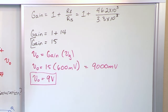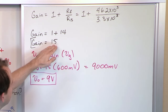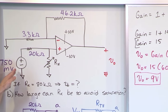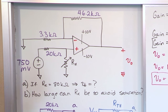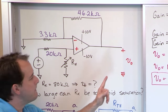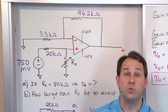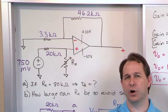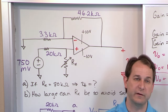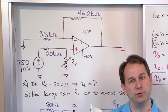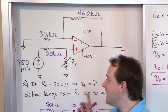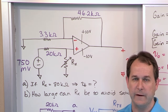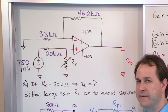You can see right away that if you didn't pay attention and you calculated gain = 15 and said 'my input signal is 750 millivolts,' you'd multiply them and get a number bigger than 9 volts, which is wrong. It all goes back to the analysis from the last section. In order to multiply the input signal times a single gain to get the output, it has to be modeled as a single voltage source with a single series resistance. So you have to find the Thevenin equivalent first.